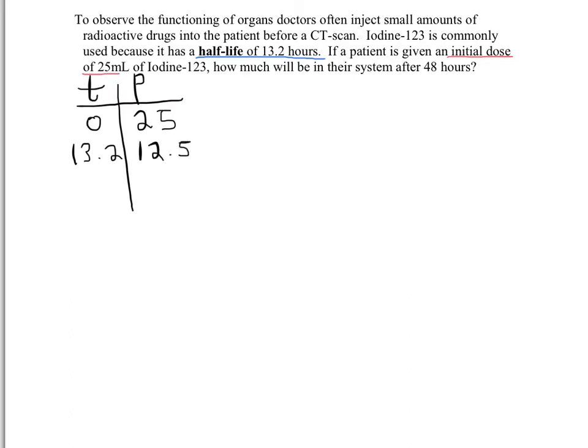You can keep going. Another 13.2 hours would be 26.4, and then we could take half of the 12.5 and that would give us 6.25. These decimals are just going to keep getting messier and messier, and obviously we're not going to hit the 48 hours exactly that we're looking for in the problem, so we need to do this with an equation.